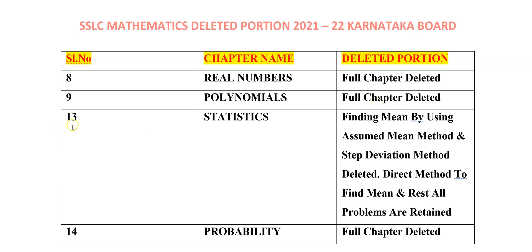Next, chapter number 13 — Statistics. In this chapter, you should be very careful with the deleted portion. In this chapter, we are going to find Mean, Median, and Mode. To find Mean, we have three methods: one is Direct Method, second is Assumed Mean Method, and third is Step Deviation Method — so totally three methods to find the mean.